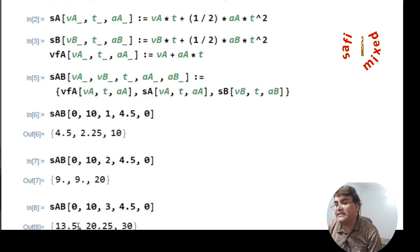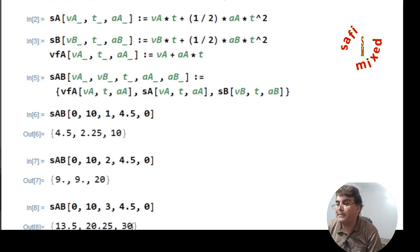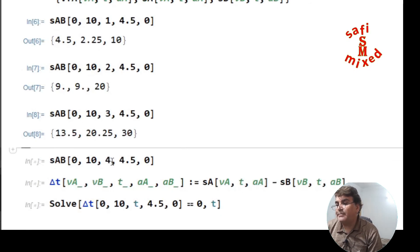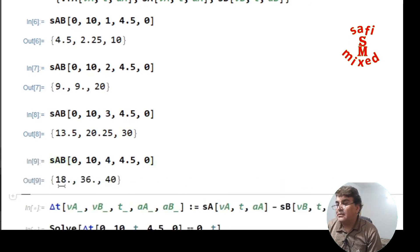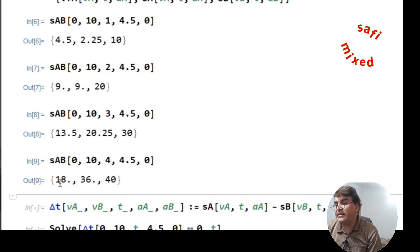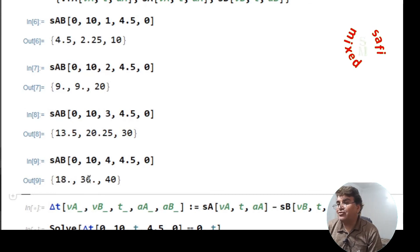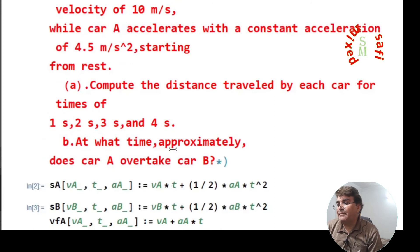Putting t=3: the velocity of car A increases to 13.5 m/s, the distance it covers is 20.25 m, and the distance covered by car B is 30 m. Substituting t=4: the velocity of car A increases to 18 m/s, the distance it covers is 36 m, and the distance covered by car B is 40 m. This way you can find the values by constructing a function.